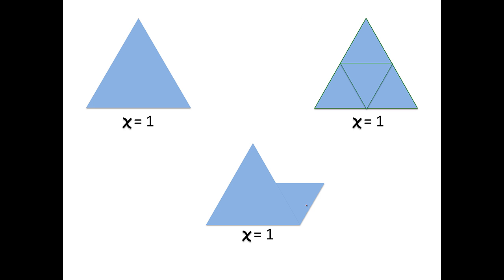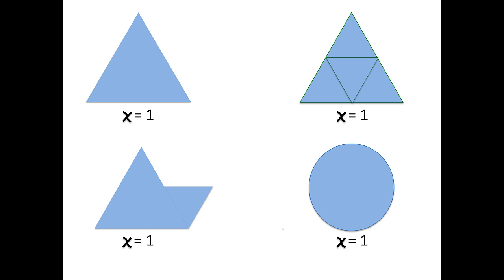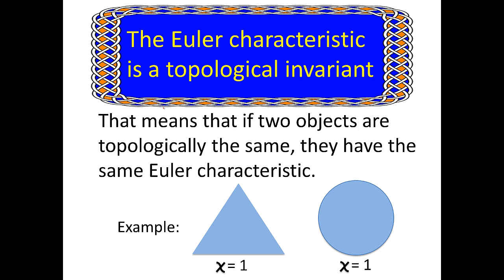By adding these triangles, we can perform nice deformations that don't change the topology and also do not change the Euler characteristic. These two operations — subdividing a triangle and adding a triangle — show us that the Euler characteristic is a topological invariant. That means if two objects are topologically the same, they will have the same Euler characteristic. Thus, if we need to know the Euler characteristic of any object on this page, we only need to calculate the Euler characteristic of one of them, because they will all have the same Euler characteristic.